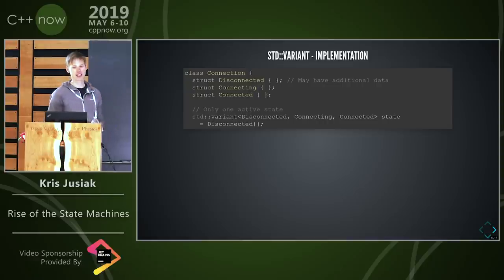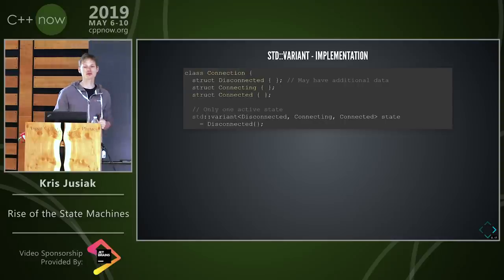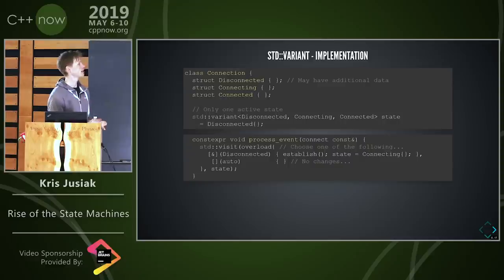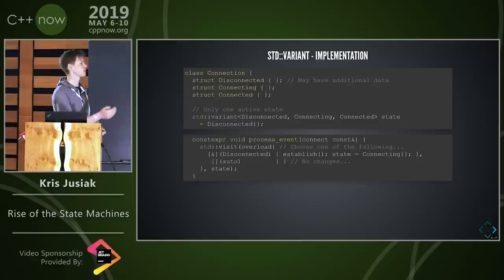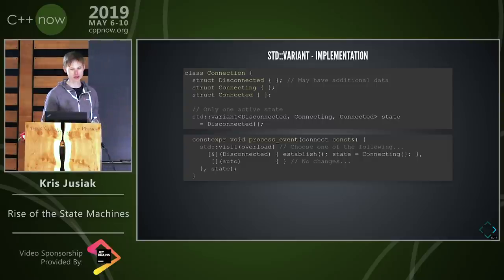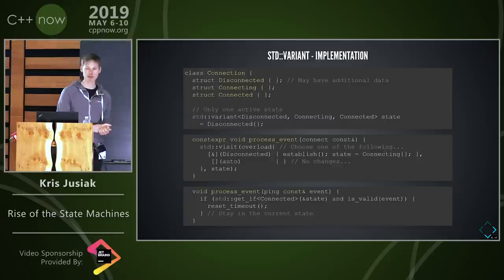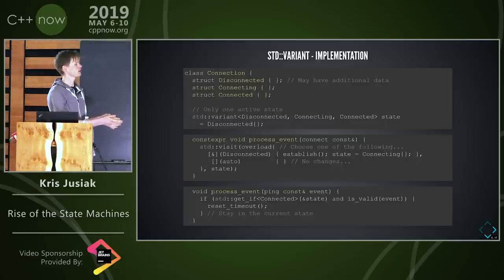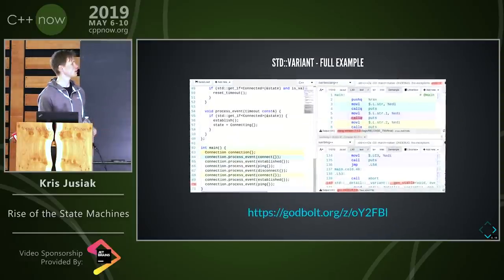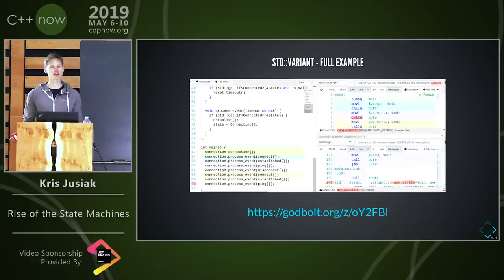With variant we can have data in any of the states, and the memory footprint will be the maximum size of all the states — which is really good for state machines. When we process, we do a visit on one of the states using the overload pattern. When we overload on 'disconnected' we call establish and change the state; otherwise we do nothing. In the ping case we verify we're in connected state, check the guard, and if satisfied we set the timer and stay.